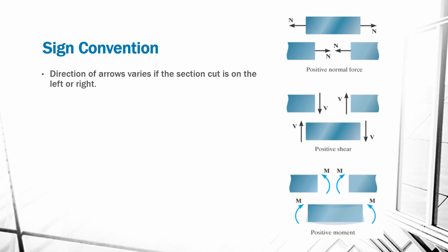This following image provides different directions of positive normal, positive shear, and positive moments. A couple of things to note: first, the direction of the arrows varies if the section cut is on the left or on the right side. This is because internal forces and internal moments are not force vectors. This may be a little bit confusing because they do have a magnitude and we can sort of give them a direction when we use arrows to represent them.